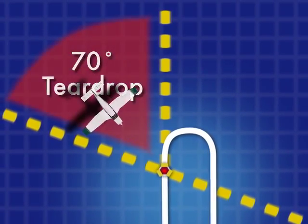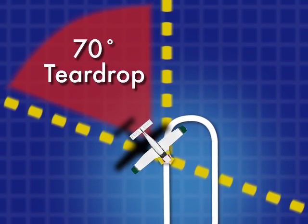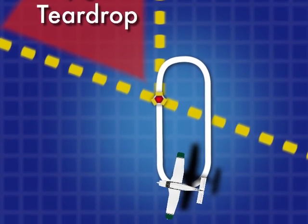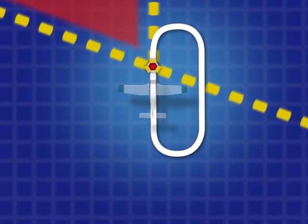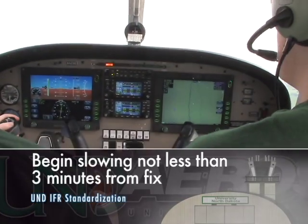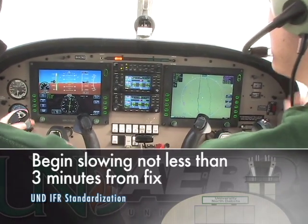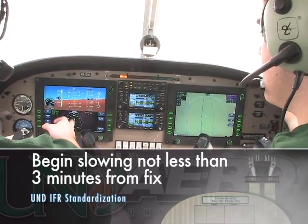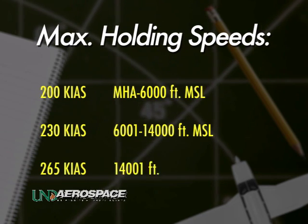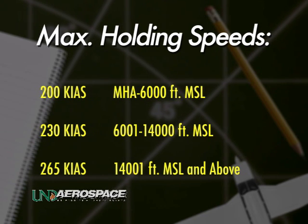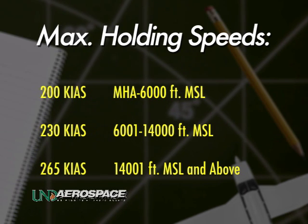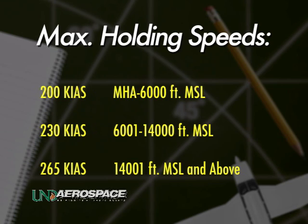A teardrop entry is performed by the pilot crossing the fix, flying at an approximate 30-degree angle to the inbound leg on the holding side of the fix for one minute, then turning to intercept the inbound leg. Once the proper entry is ascertained, the pilot should begin to slow to the proper holding speed not less than three minutes from the fix. The AIM dictates maximum holding speeds at 200 knots from the minimum holding altitude to 6,000 feet MSL, 230 knots between 6,001 and 14,000 feet MSL, and 265 knots from 14,001 feet MSL and above.